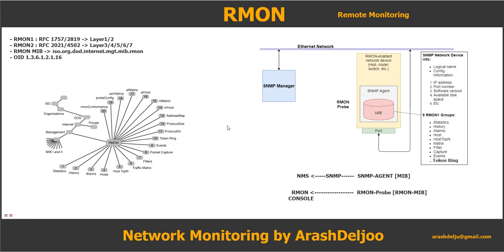You can also define a threshold for the RMON probe — when the threshold is reached, you can send information such as an alarm to the RMON console. One possible disadvantage of RMON is that the remote device must handle more of the management processing and requires more resources to do so. Some devices balance this trade-off by implementing only a subset of RMON MIB groups, so a minimal RMON agent implementation could support only statistics, history, alarm, and event.